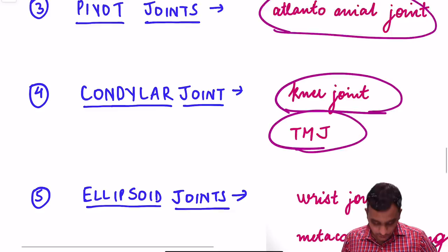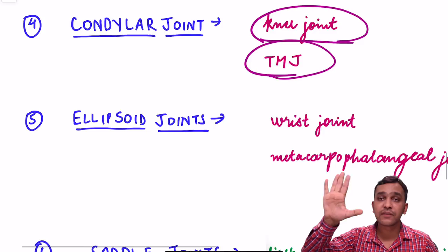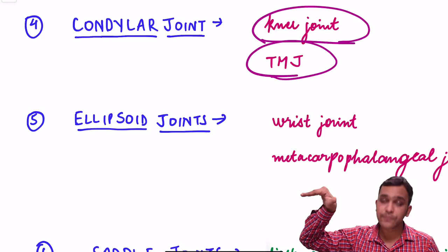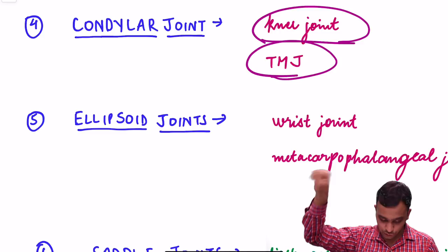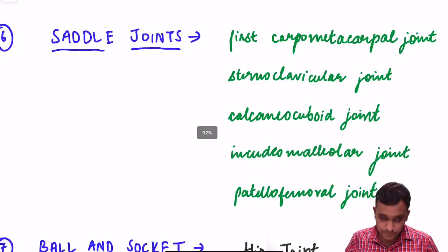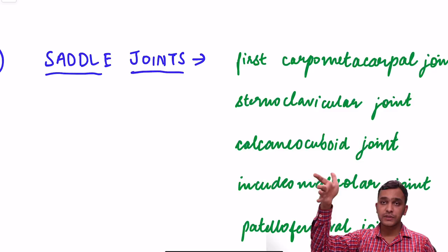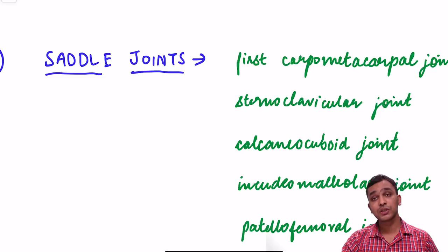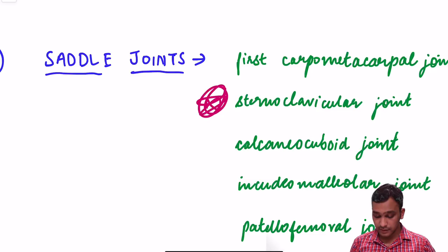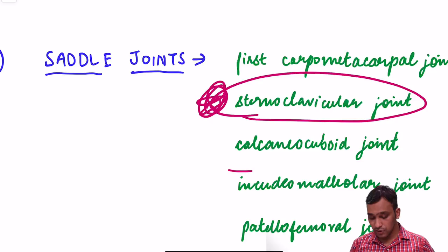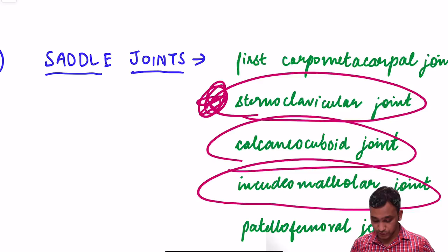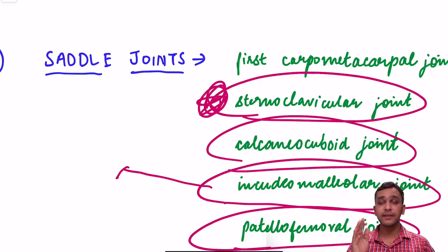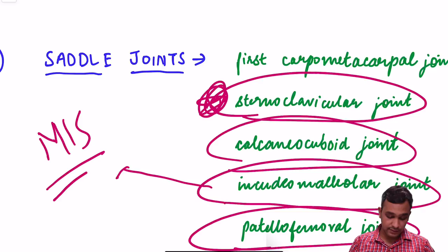Ellipsoid joints — the joint between the metacarpals and phalanges is an ellipsoid joint, and the wrist joint is also an ellipsoid joint. Saddle joints — examples are the first carpometacarpal joint, the sternoclavicular joint (remember this is a saddle joint), the calcaneo-cuboid joint, the incudomalleolar joint, and the patellofemoral joint. To remember that the joint between the malleus and incus is a saddle joint, use the mnemonic MIS — malleus, incus, saddle.